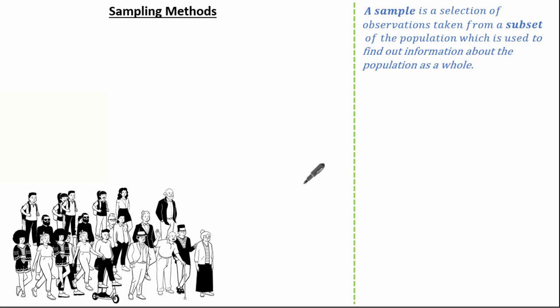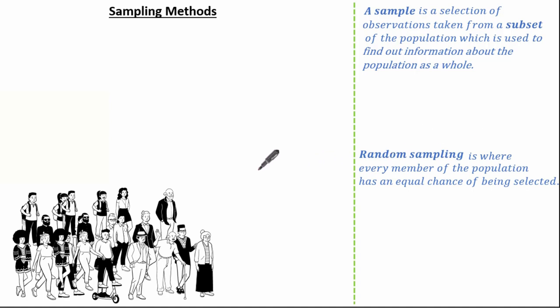A sample is a selection of observations taken from a subset of the population, which is used to find out information about the population as a whole. Now we know what a sample is, let's look at some more keywords starting with random sampling. Random sampling is where every member of the population has an equal chance of being selected. Random sampling uses sampling units, and a sampling unit is named or numbered to form a list called a sampling frame.